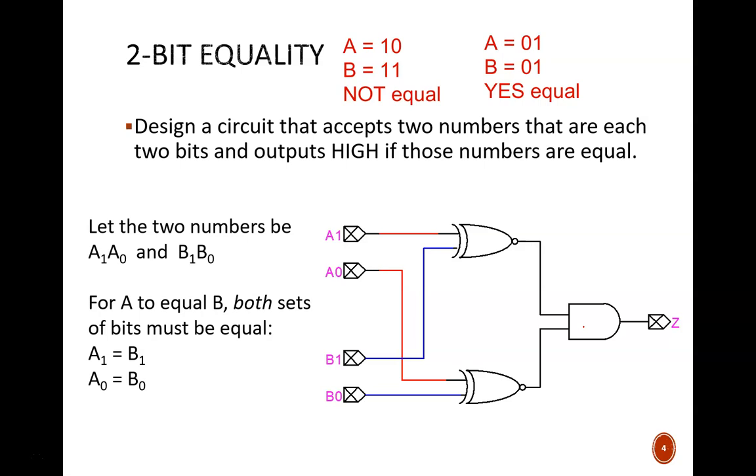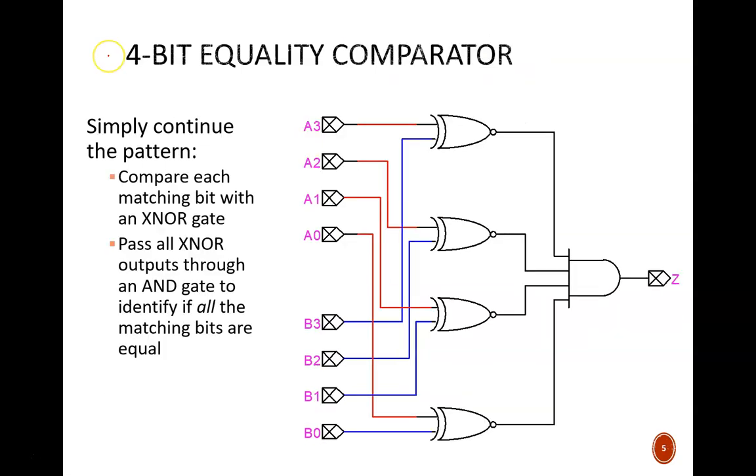How do you think we could extend this idea to four bits? By simply extending the pattern. Again, we build a circuit that compares each corresponding individual bit using an exclusive NOR gate. Then, all of those results are fed into a single AND gate.